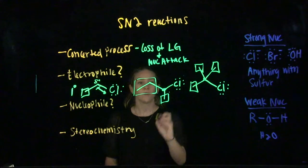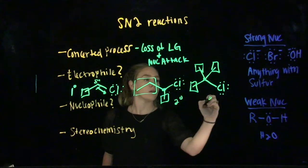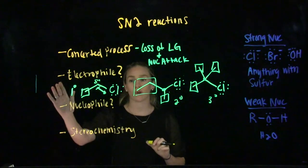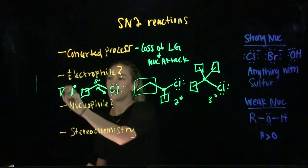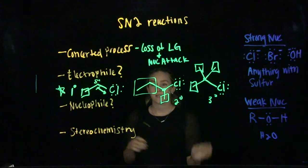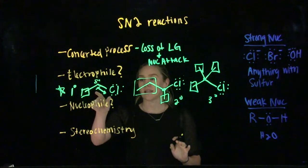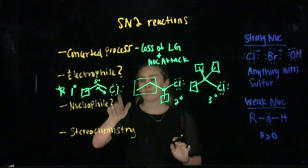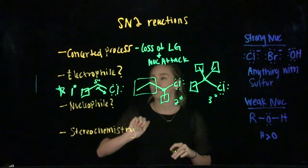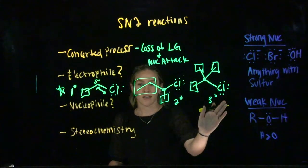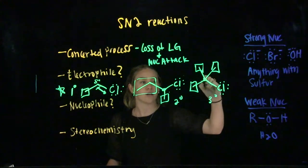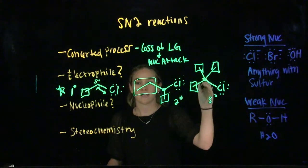The important thing to note for an SN2 reaction is that we want our electrophile to be primary. This is the most favorable. The reason is because our nucleophile is attacking at the same time as the leaving group leaving, we need room for that nucleophile to come in and attach itself to the electrophile. In the tertiary position, there's not much room because we have so many R groups here crowding the electrophilic center. It would be really hard for a nucleophile to come in and attack right there.